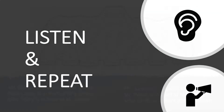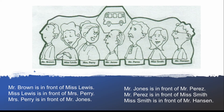Listen and repeat. Mr. Brown is in front of Ms. Lewis. Ms. Lewis is in front of Mrs. Perry. Mrs. Perry is in front of Mr. Jones. Mr. Jones is in front of Mr. Pérez. Mr. Pérez is in front of Ms. Smith. Ms. Smith is in front of Mr. Hansen.